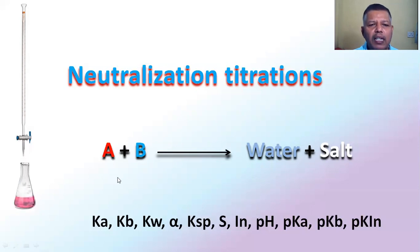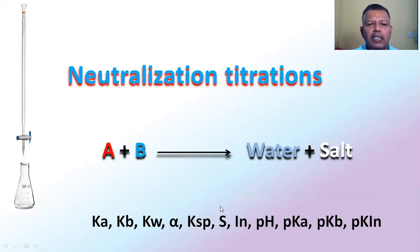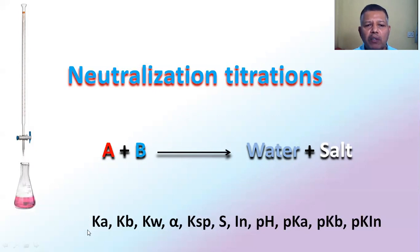Some important terms in this reaction: KA is the equilibrium constant for acid; KB is the equilibrium constant for base; KW is the equilibrium constant for water; alpha is the degree of dissociation — here acid and base completely ionize; KSP is the solubility product constant; S is the solubility; pH is the concentration or strength of hydrogen ions present in the solution; pKA is the negative logarithm of the equilibrium constant for acid; and pKB is the negative log of the equilibrium constant for the base.